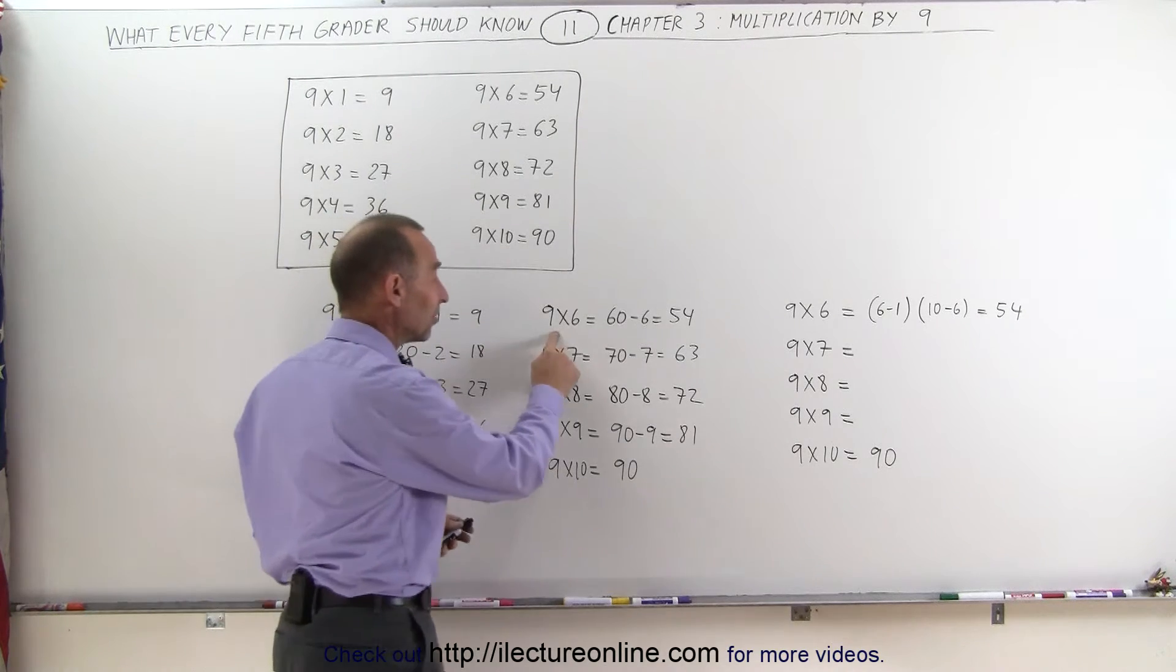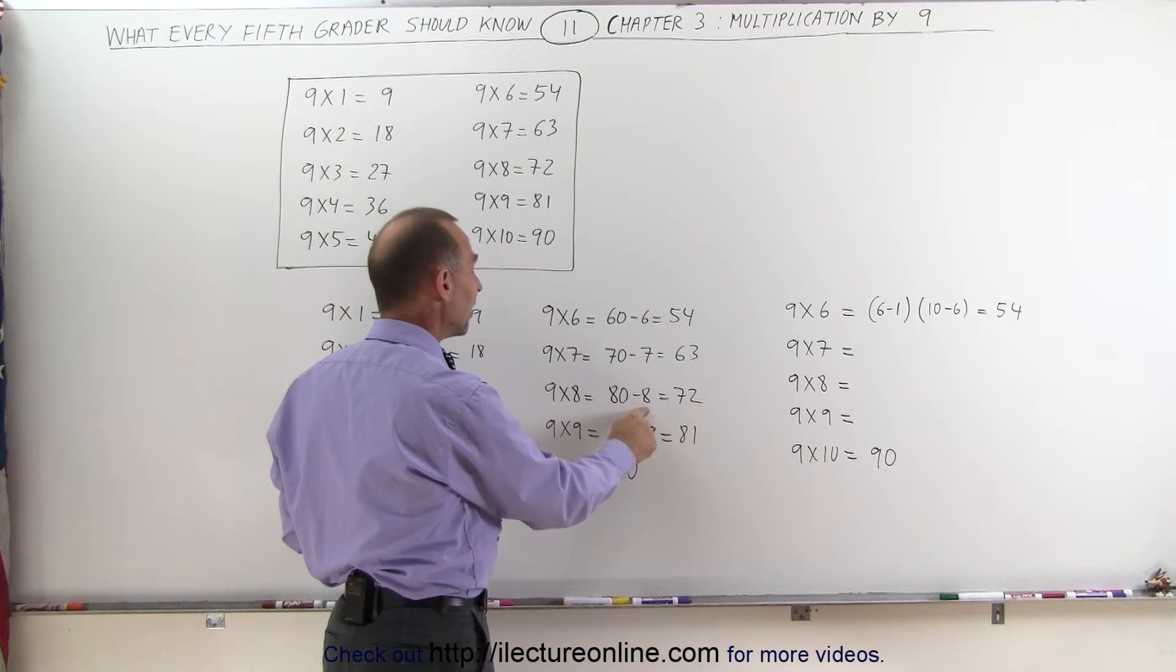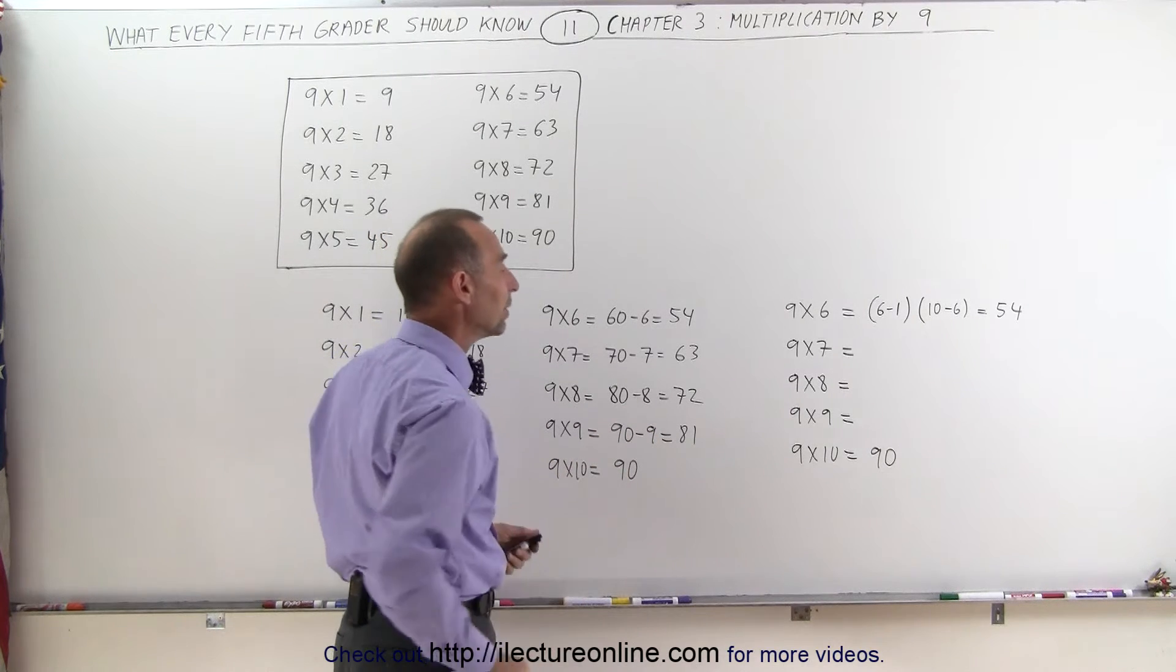And continuing, 9 times 6 I saw as 60 minus 6, 9 times 7 was 70 minus 7, 9 times 8 was 80 minus 8, 9 times 9 was 90 minus 9, and 9 times 10 was simply 90.